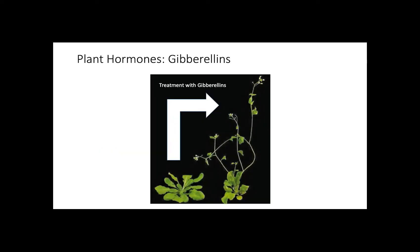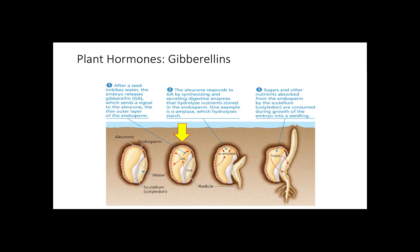The next group of hormones are gibberellins. As with auxins, gibberellins are also produced at the meristems of apical buds, roots, and in developing seeds. These hormones are especially important for stem elongation and pollen development. Similar to auxins, gibberellins loosen cell walls and facilitate entry of expansive proteins, promoting elongation. In seeds, gibberellins stimulate the hydrolysis of starch and the production of sugars, so that they can be consumed during the formation and growth of new embryos.